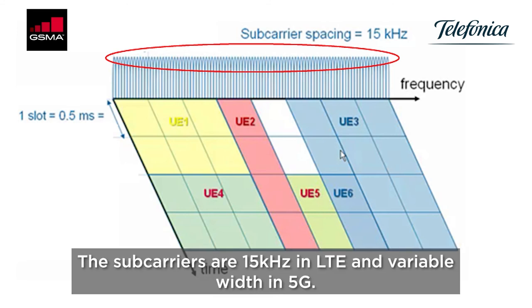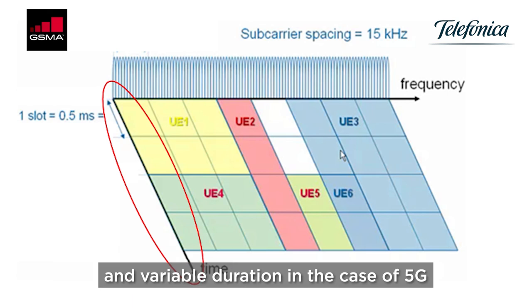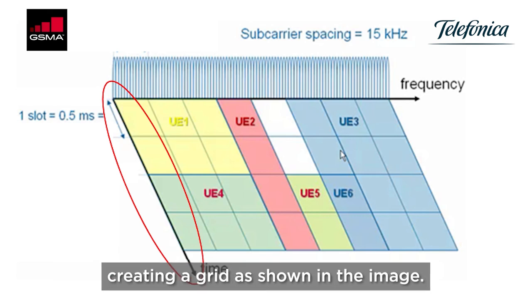These subcarriers are 15 kHz in LTE and variable width in 5G. In the time domain, it also makes a division of 0.5 ms in LTE and variable duration in the case of 5G.